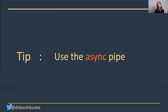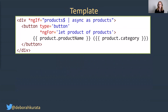But how are we subscribing and unsubscribing if we aren't technically subscribing and unsubscribing? Well, that brings up our next tip, which is to use the async pipe. The async pipe automatically subscribes and automatically unsubscribes for us. So in our template, we bind to products$ from our component, use the async pipe to subscribe and unsubscribe for us, and the 'as products' clause defines the variable that the emitted value is stored in, which we can then use throughout our template.